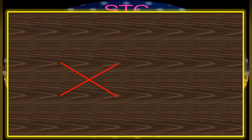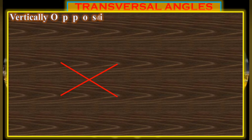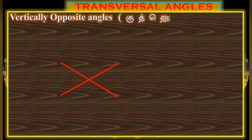Now, how easy is it to identify these angles? First, the transversal angle — vertically opposite angle, shortened as VOA.